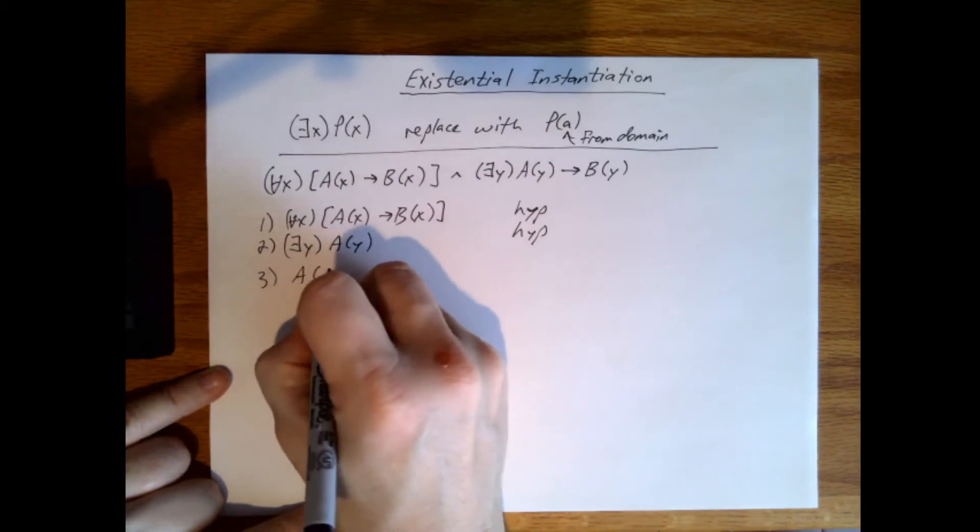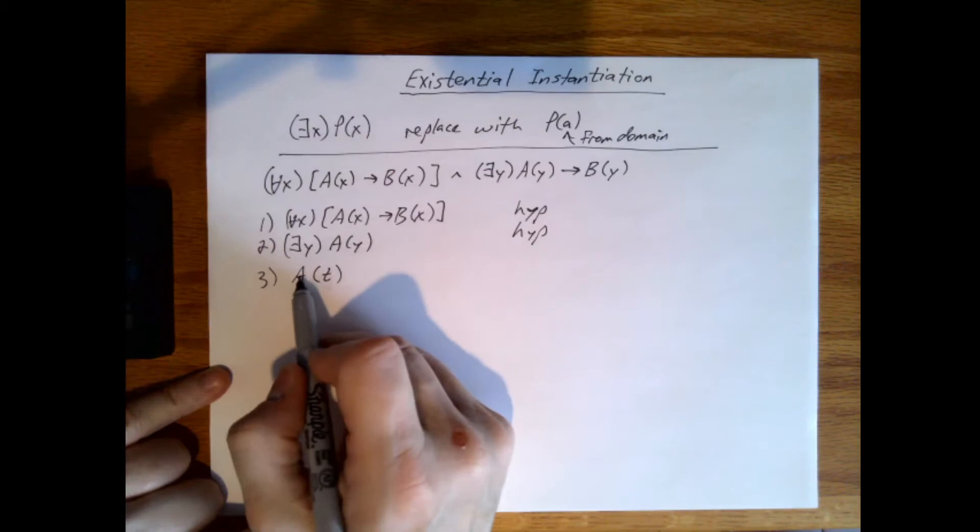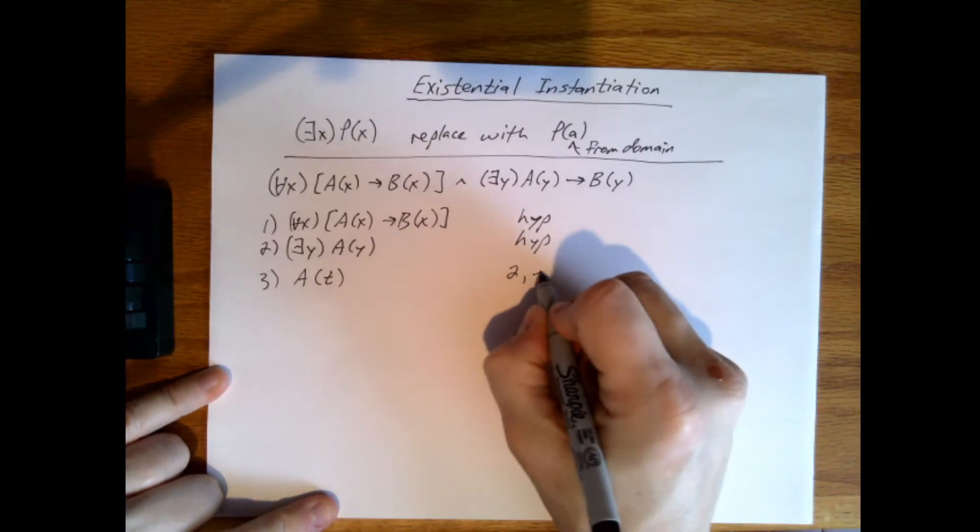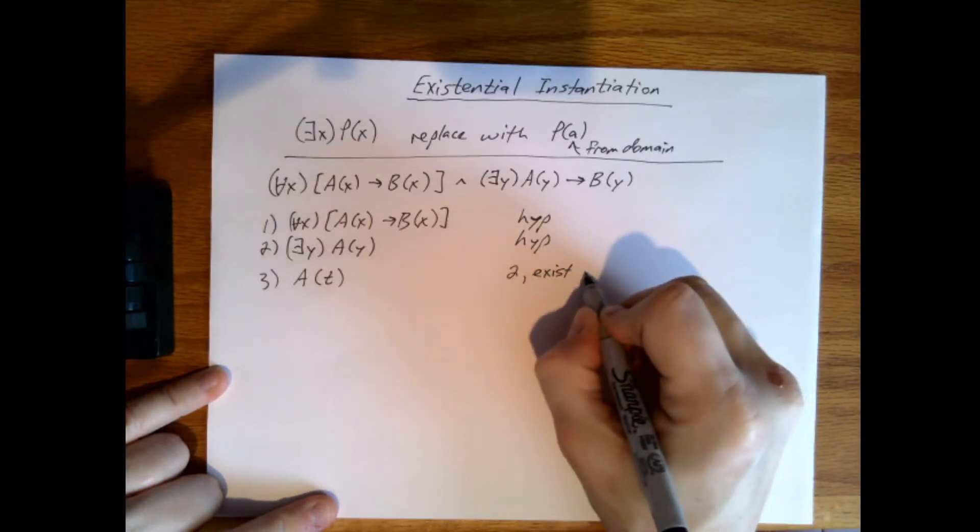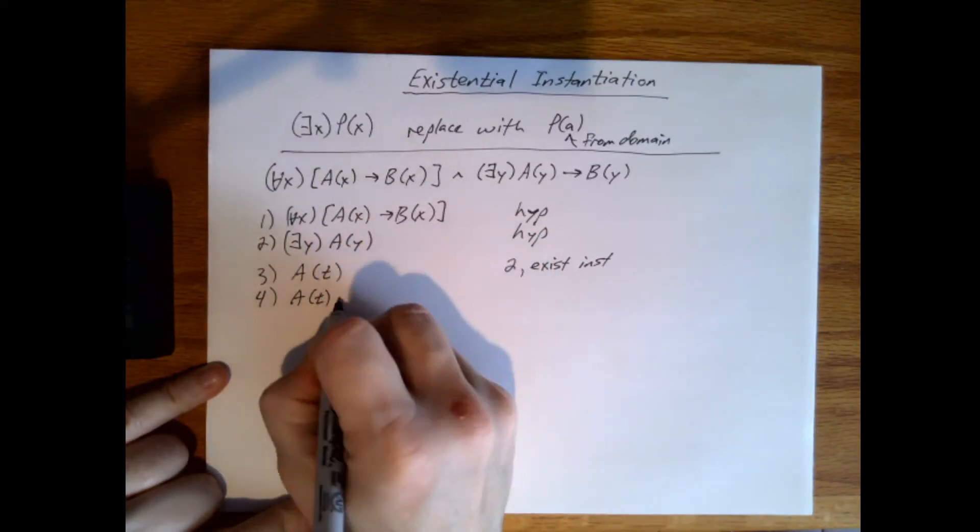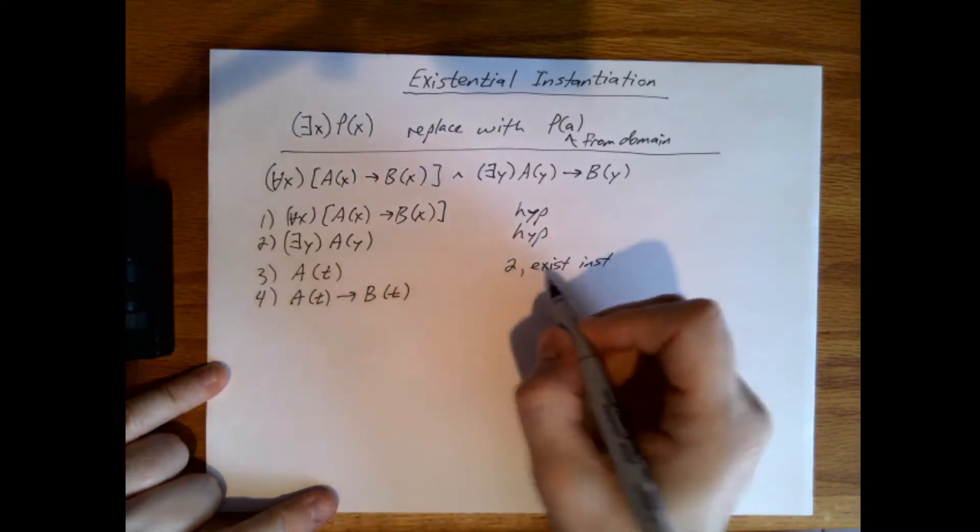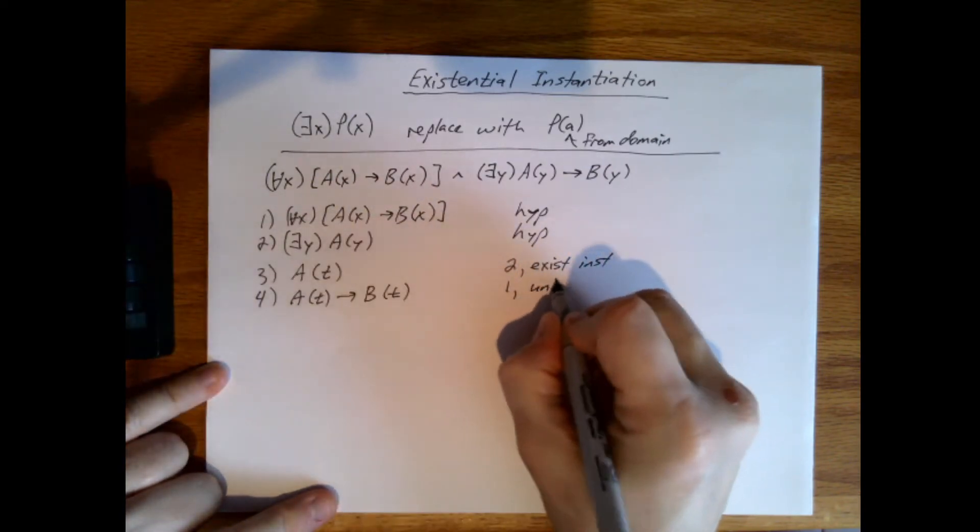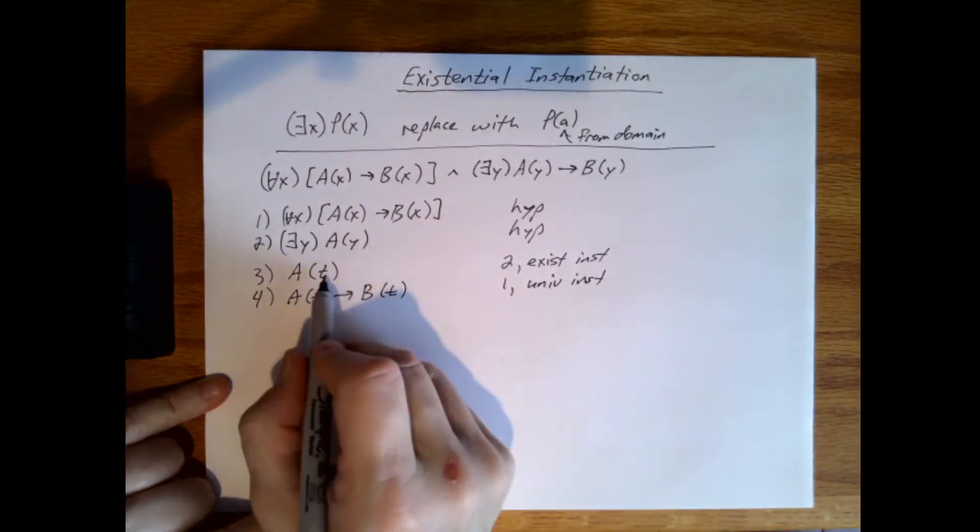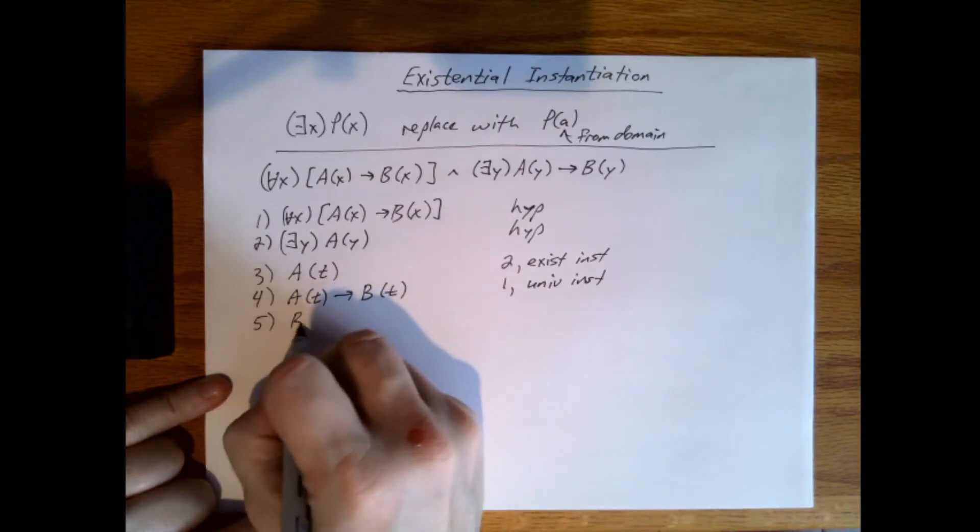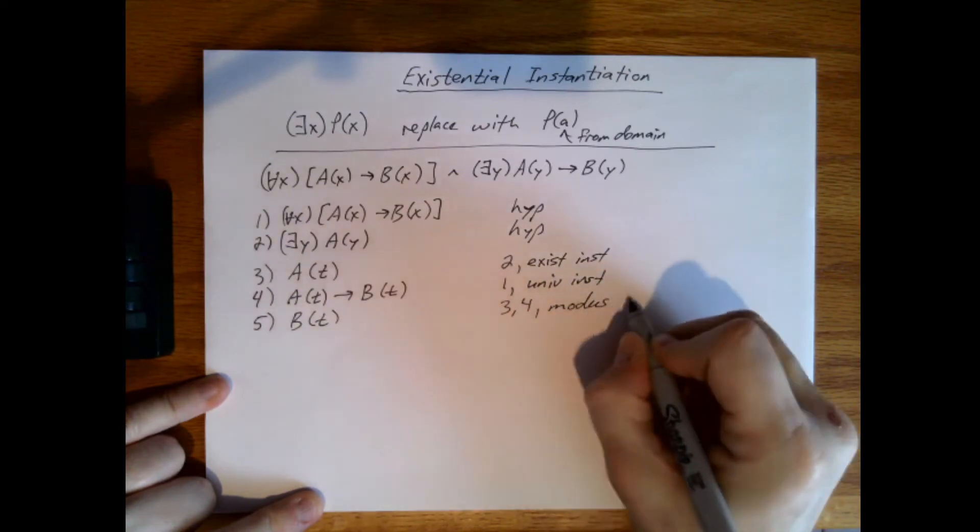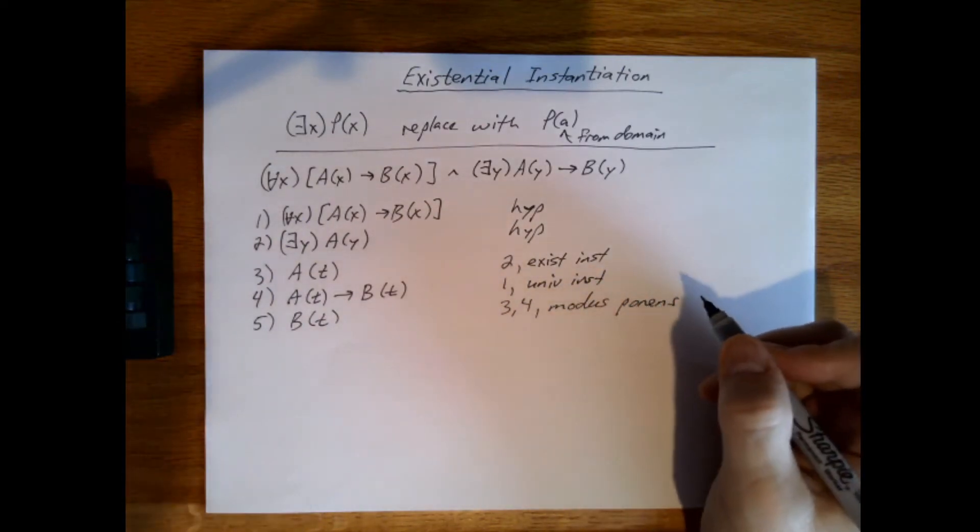So I have A of, say, T, so I won't confuse A and A when I'm saying it. So this is two, existential instantiation, and now I'm going to have A of T implies B of T. So now I did one, universal instantiation. And now A of T implies B of T and A of T allows me to conclude B of T. So this is three, four, modus ponens.